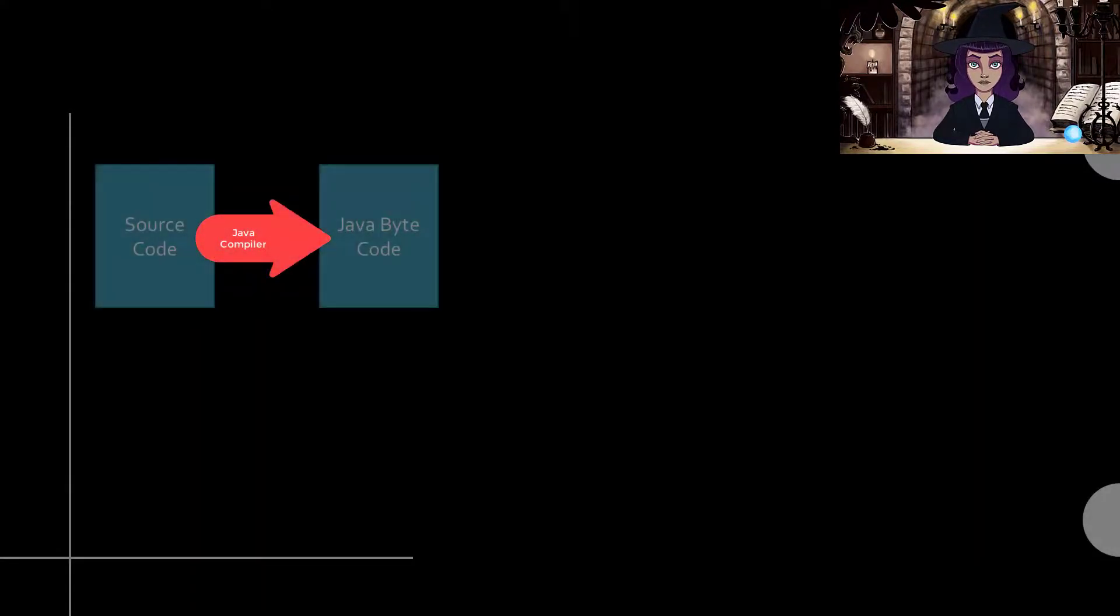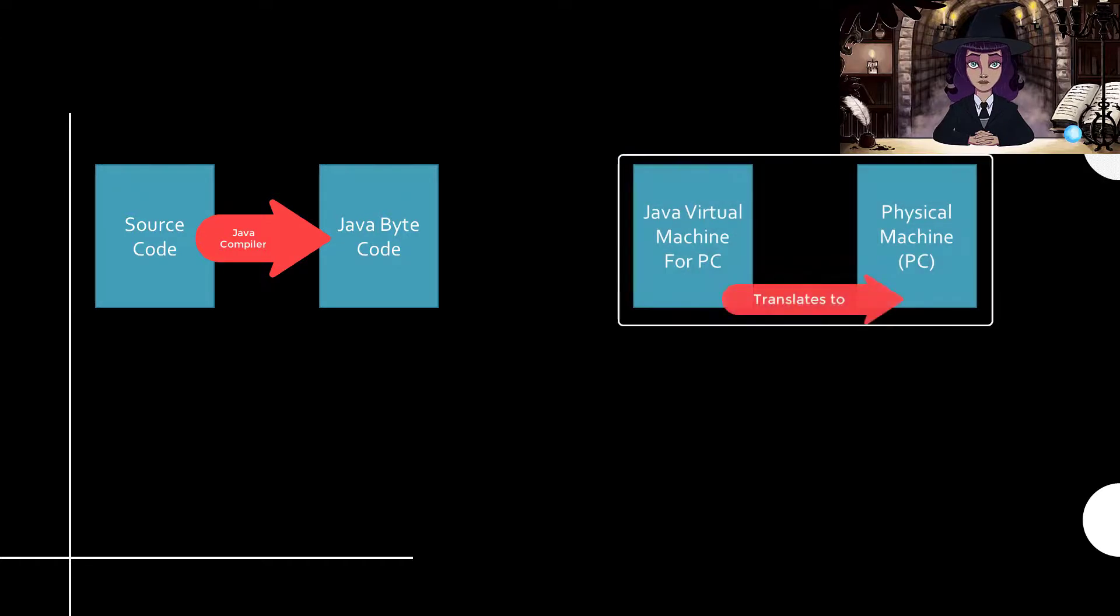I think we better let me take a stab at this one. We write our code in Java. That's the source code. The Java compiler translates that source code into Java bytecode, which is a machine language, but not for a physical machine. It's the machine language of the Java virtual machine. When we want our program to run on one type of physical machine, say for example, a PC, we install on that PC the Java virtual machine for that kind of machine, and it runs our Java bytecode for us.